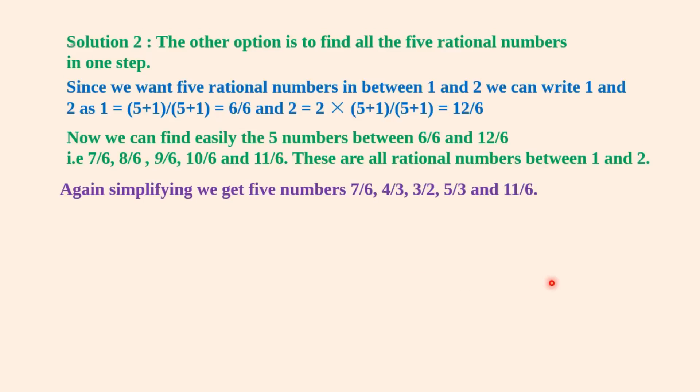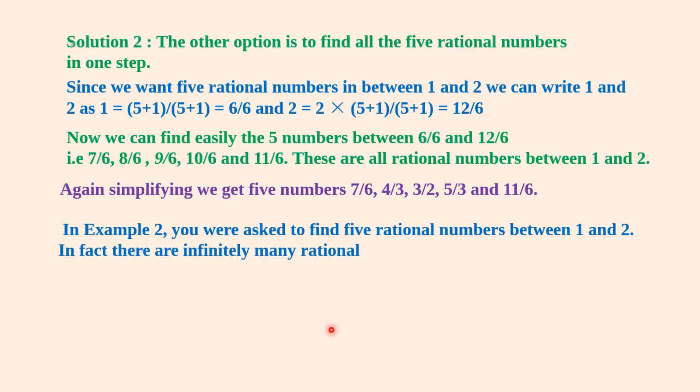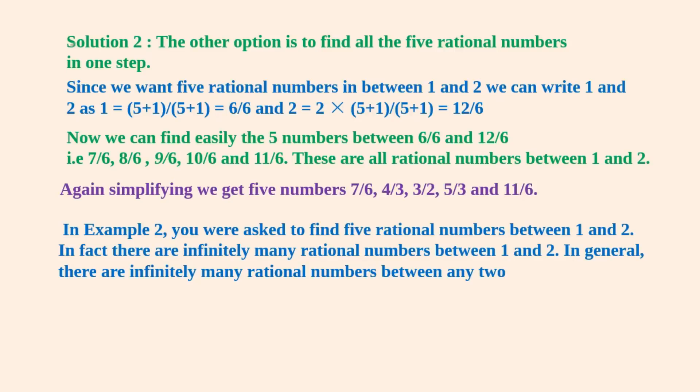Notice that in Example 2 you were asked to find 5 rational numbers between 1 and 2, but you must have realized that in fact there are infinitely many rational numbers between 1 and 2. In general, there are infinitely many rational numbers between any two given rational numbers.